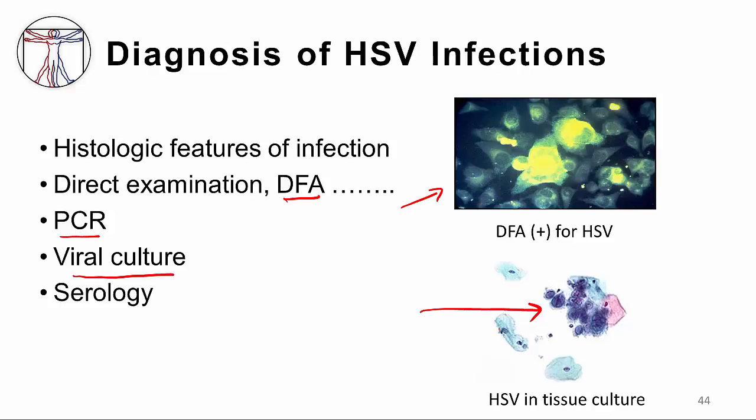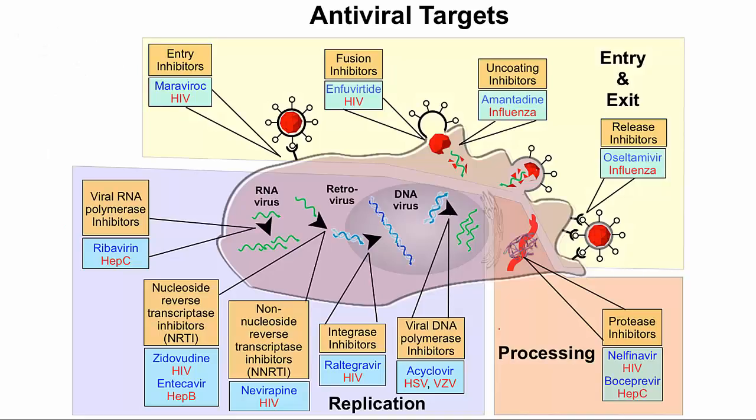It takes ten days to two weeks for antibody to form, so this diagnostic test is relatively slow. It also doesn't necessarily distinguish between HSV-1 and HSV-2 unless you use special tests based upon glycoprotein differences between HSV-1 and HSV-2. So that's the diagnosis of HSV infections.